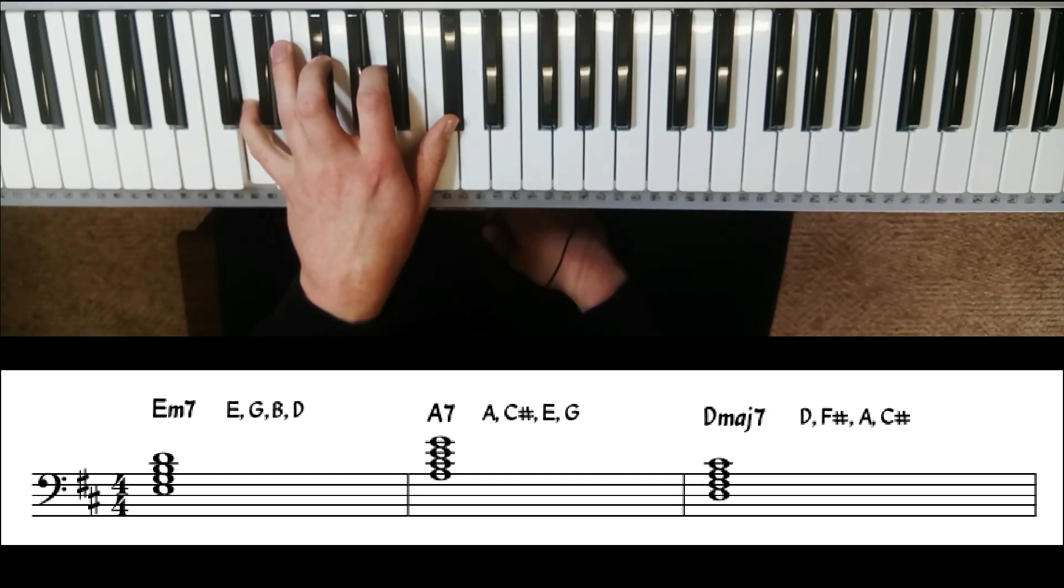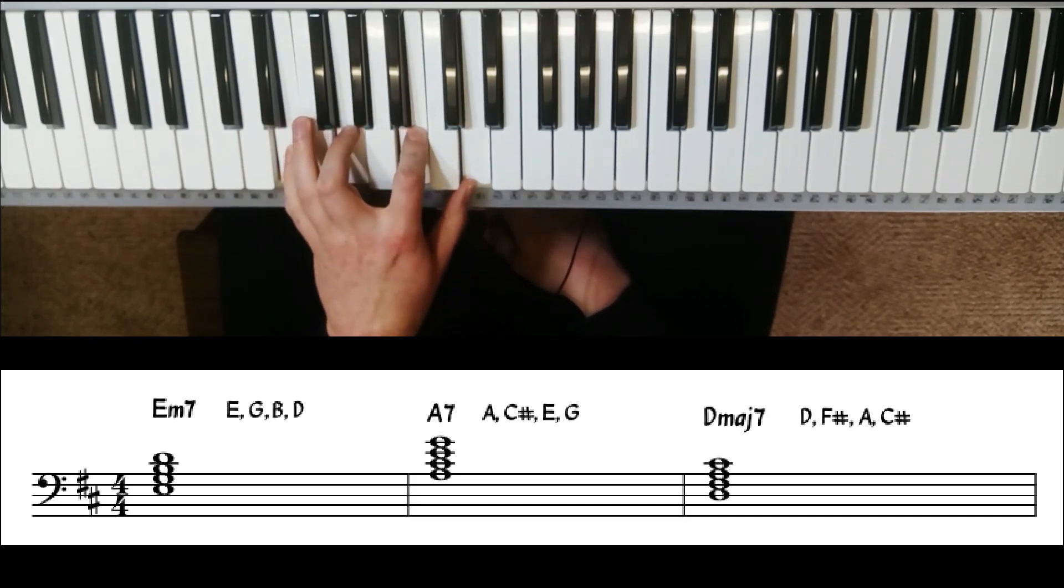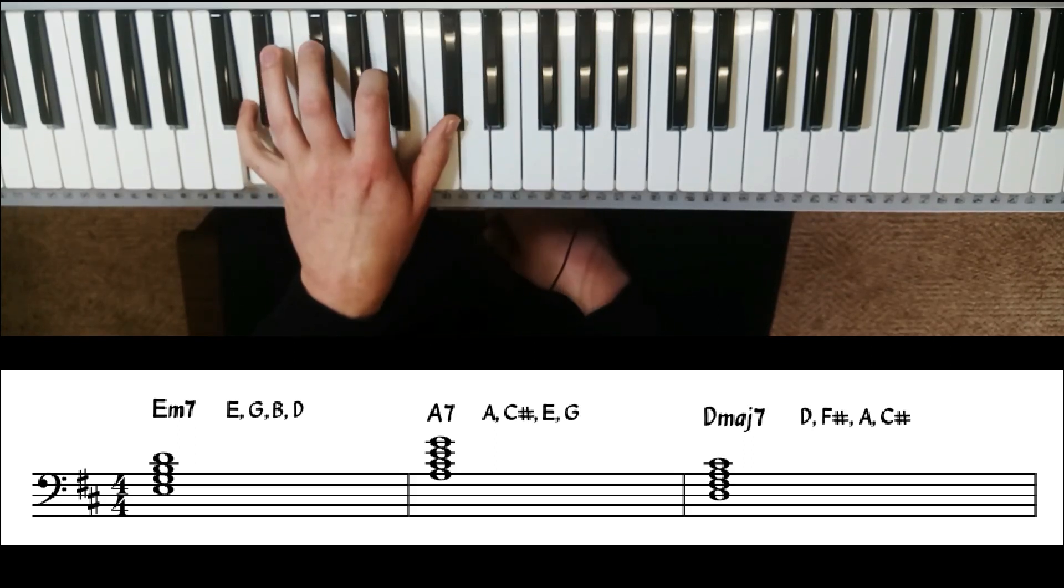So this one's a little bit harder, we have some more black notes to play. So our 2-5-1 looks like this. E minor 7, A7, D major 7.